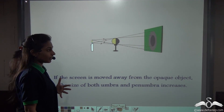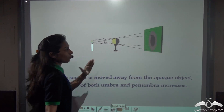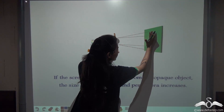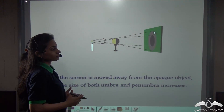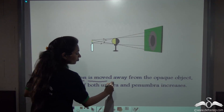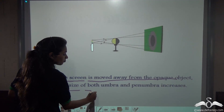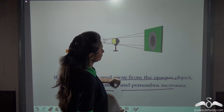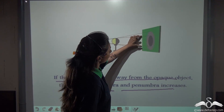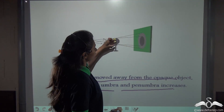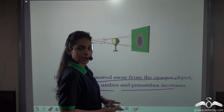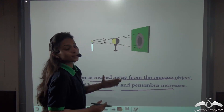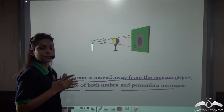Now let's do the opposite — instead of bringing the screen forward, let us take it backward. The distance between the ball, that is the opaque object, and the screen is increasing. So what happens to the shadow? The shadow is getting bigger. If the screen is moved away from the opaque object, the size of both umbra and penumbra increases. The shadow is getting bigger, the umbra is getting bigger as well, and the penumbra is also increasing in size. So whenever we increase the distance between the opaque object and the screen, both umbra and penumbra increase, making the shadow larger.